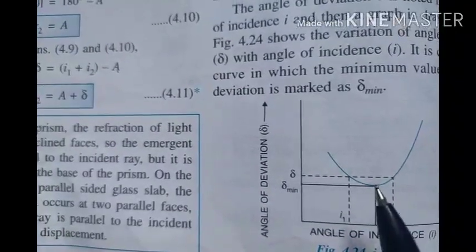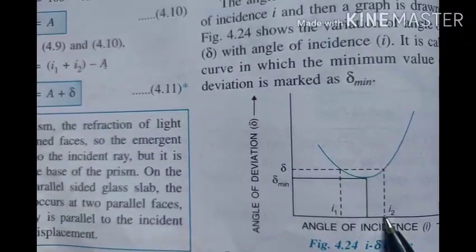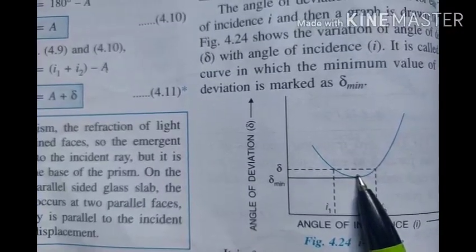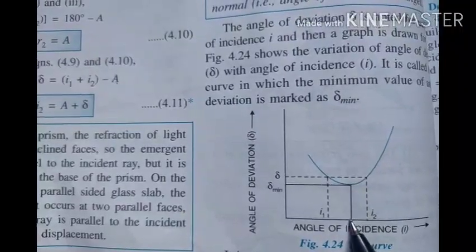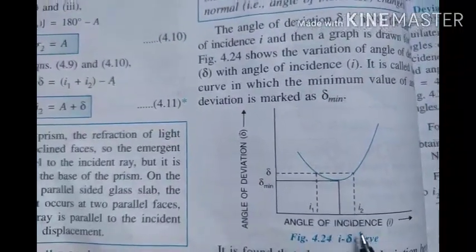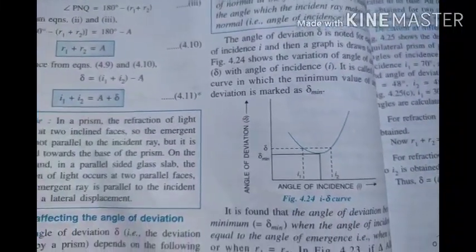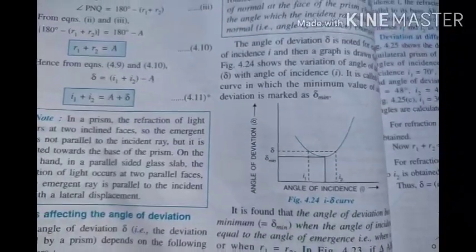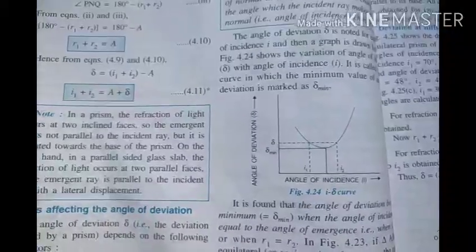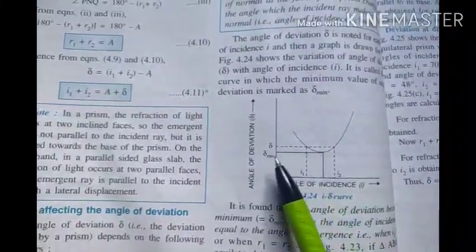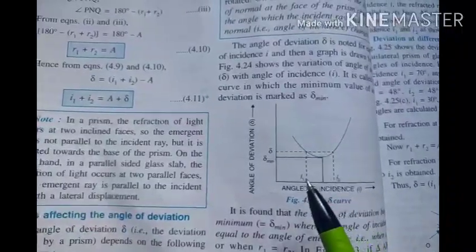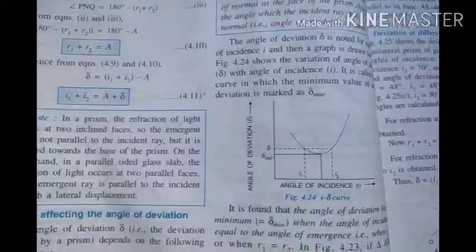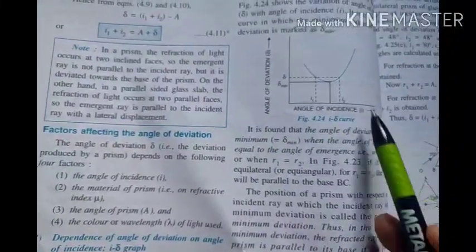After reaching the minimum, as the angle of incidence increases further, the angle of deviation starts increasing again. So there is a particular point — one specific value of angle of incidence — for which the angle of deviation becomes minimum. This is called the minimum angle of deviation. For any other value of angle of incidence, the deviation is more than the minimum.